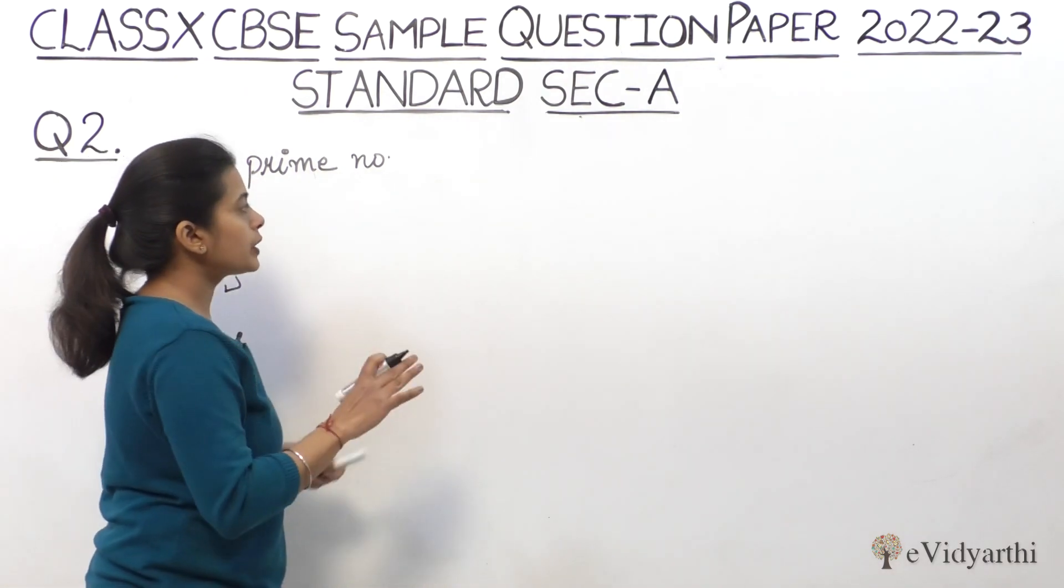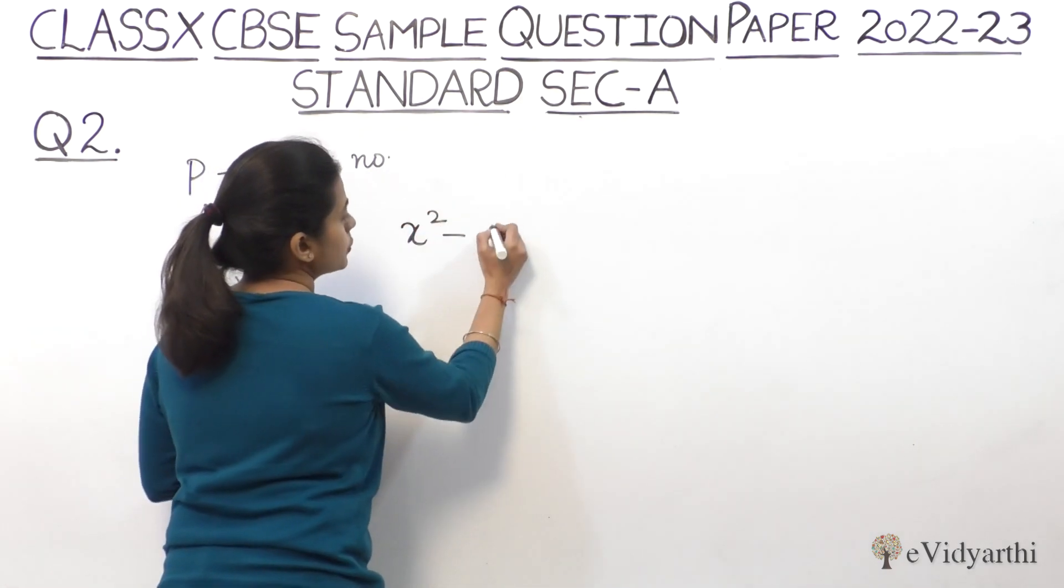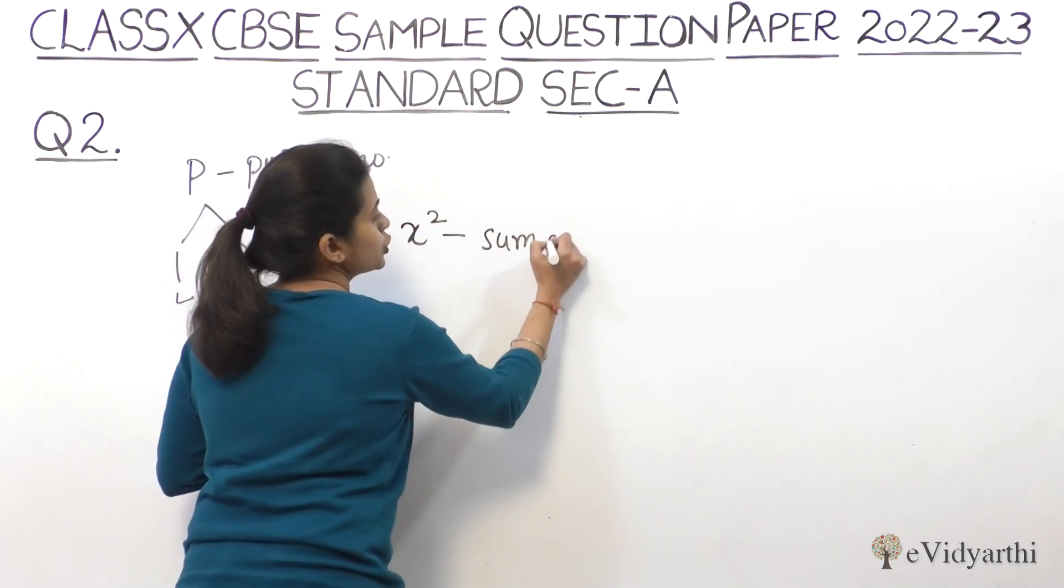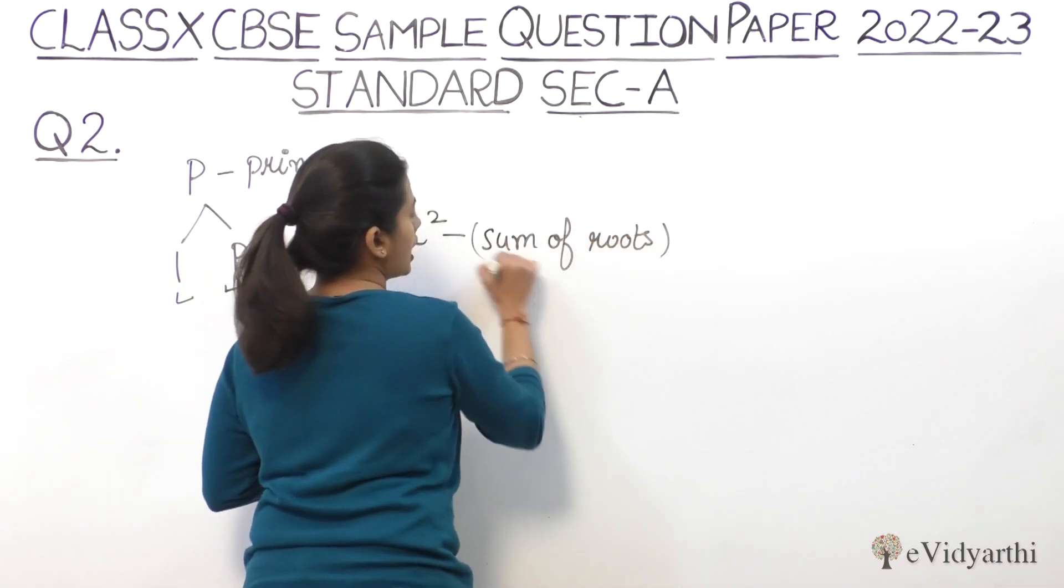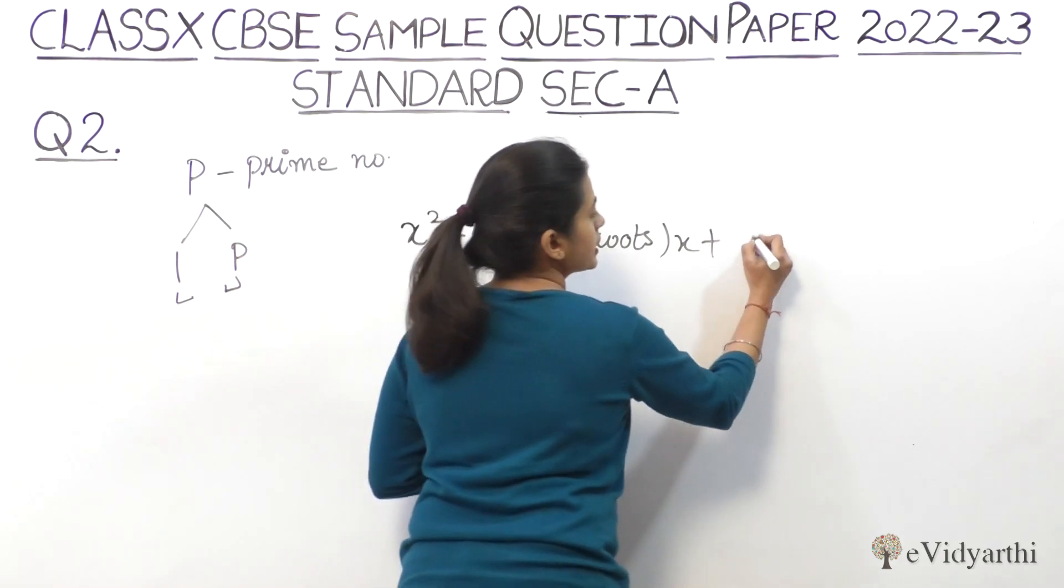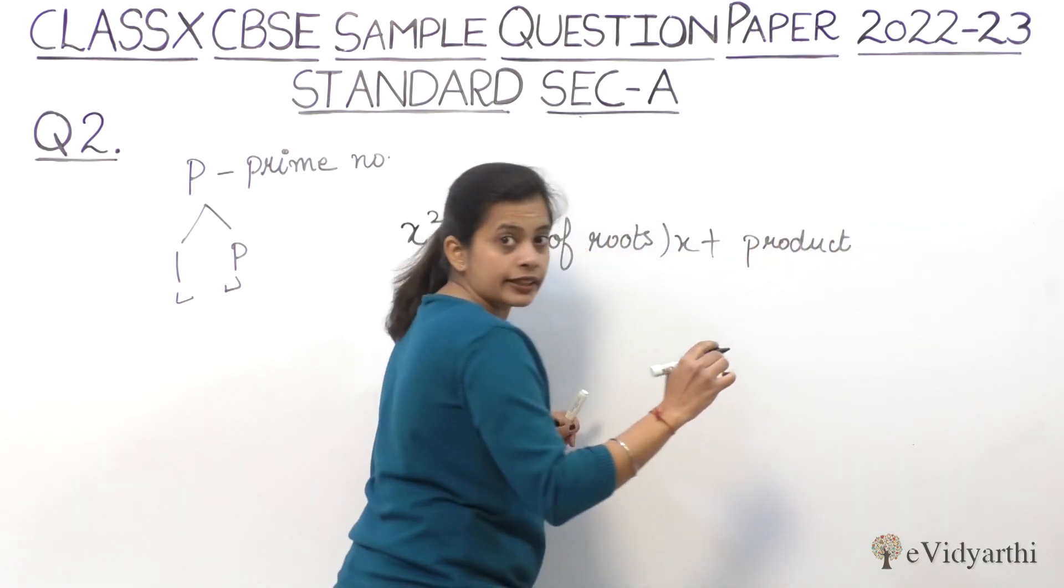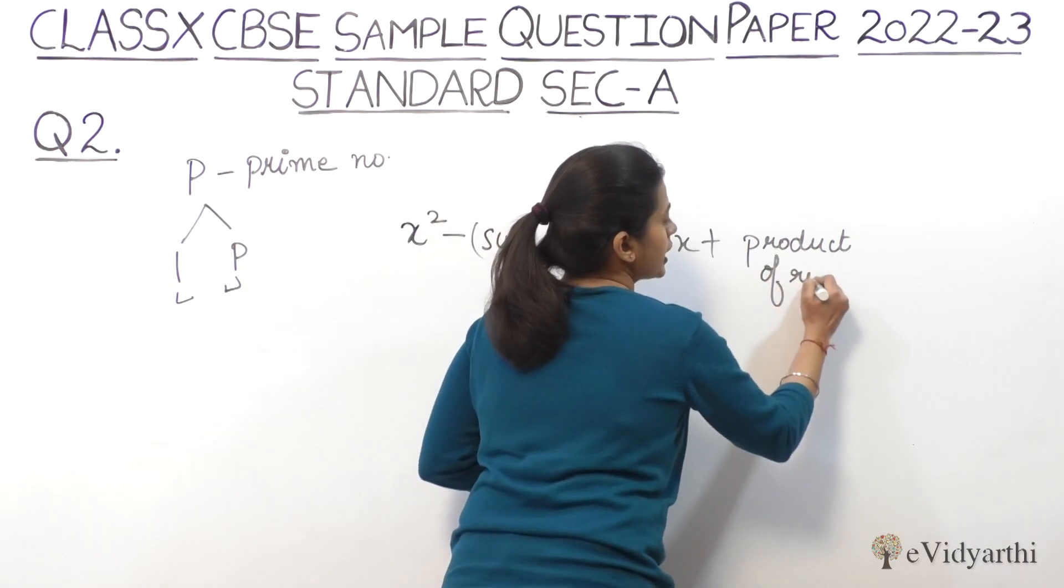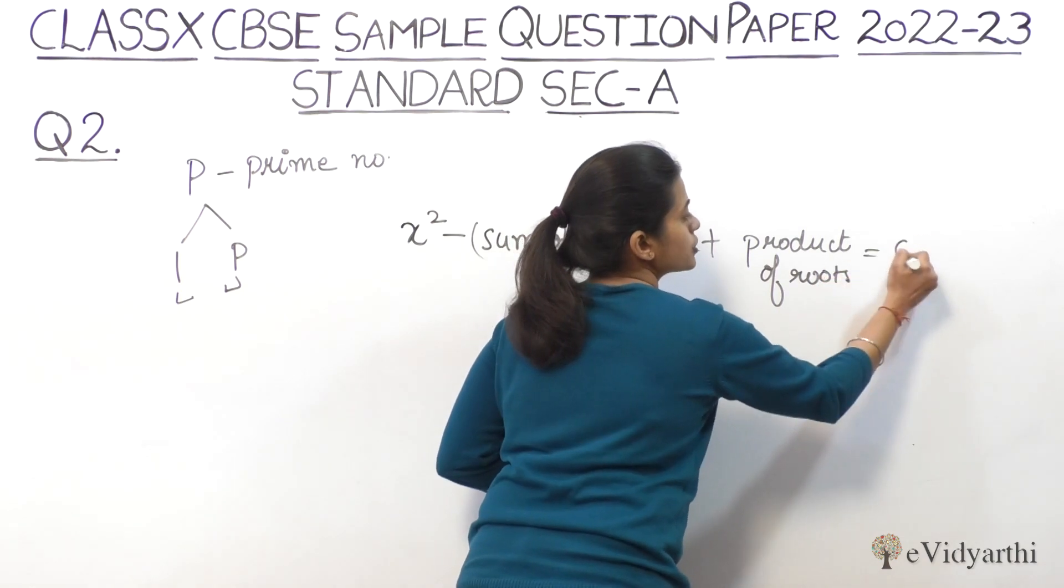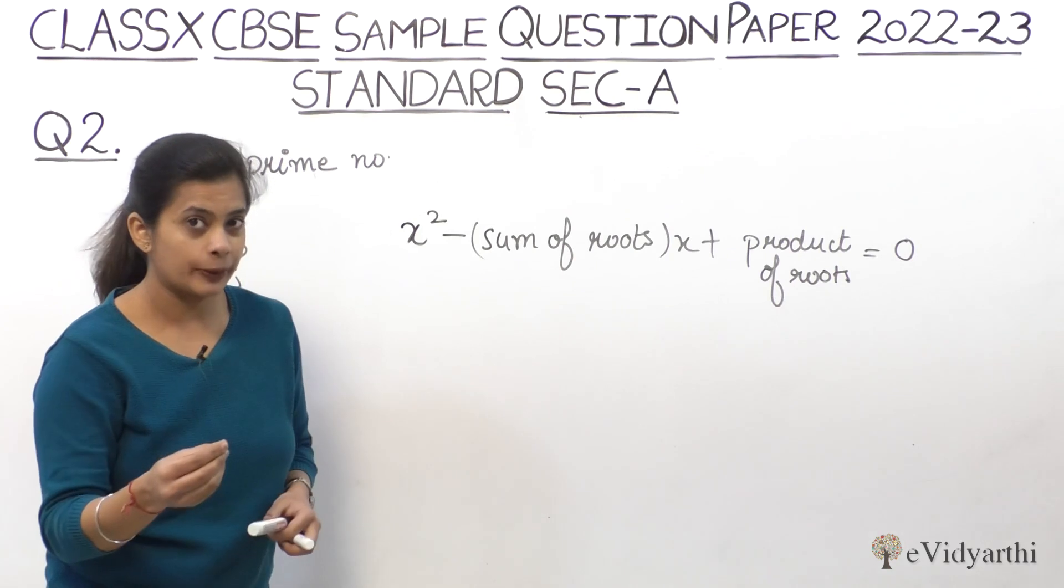Now let's see how we write any quadratic equation. What we need is: x² minus sum of roots times x plus product of roots equals 0. If my roots are alpha and beta, this is my general quadratic equation.